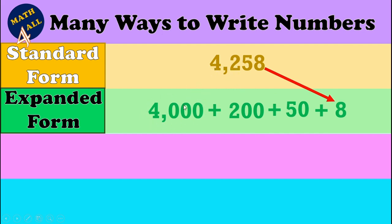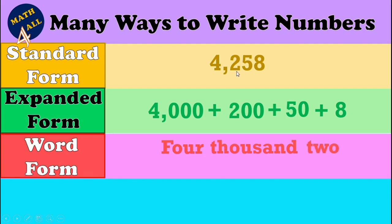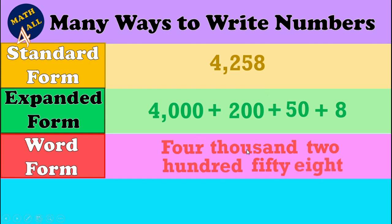In the expanded form, we write each digit with its real value — four thousand plus two hundred plus fifty plus eight — and replace the rest of the number with zeros. Now the next way is the word form: we want to write this number in letters. The first part before the comma is four, and we call this comma 'thousand.' So: four thousand two hundred fifty-eight.